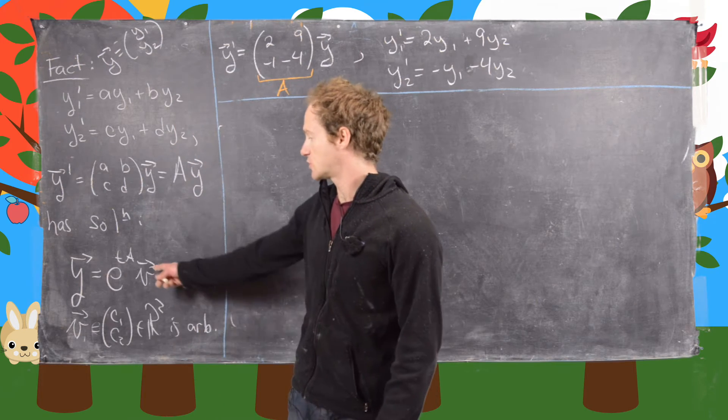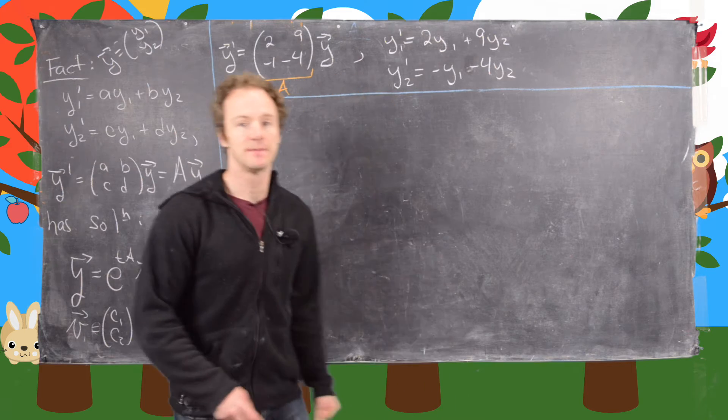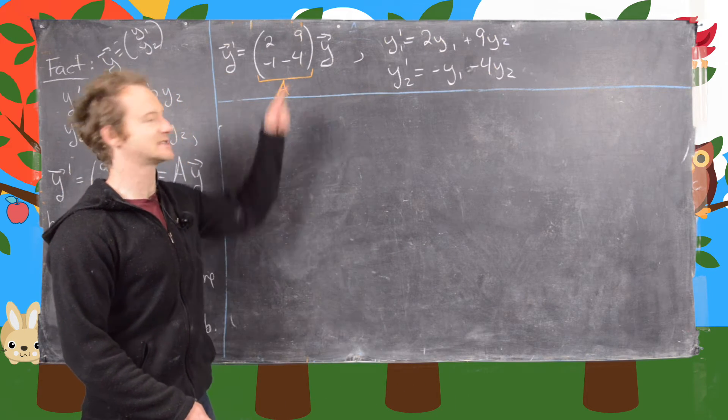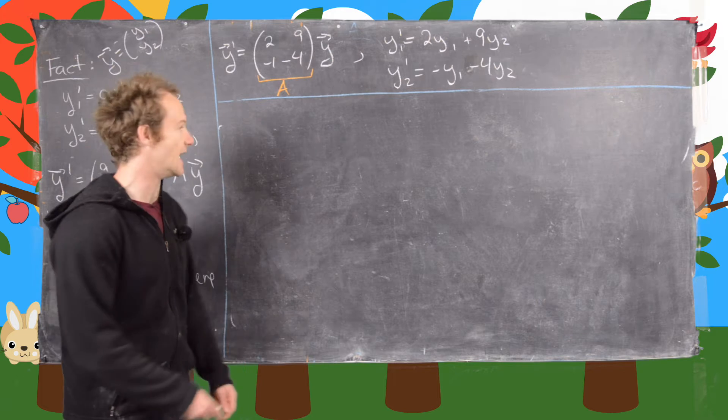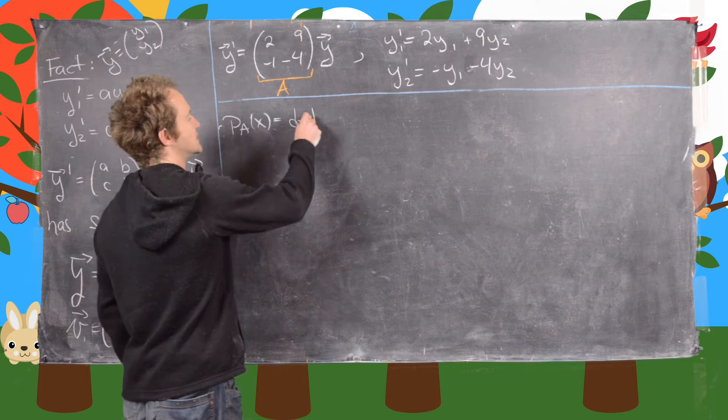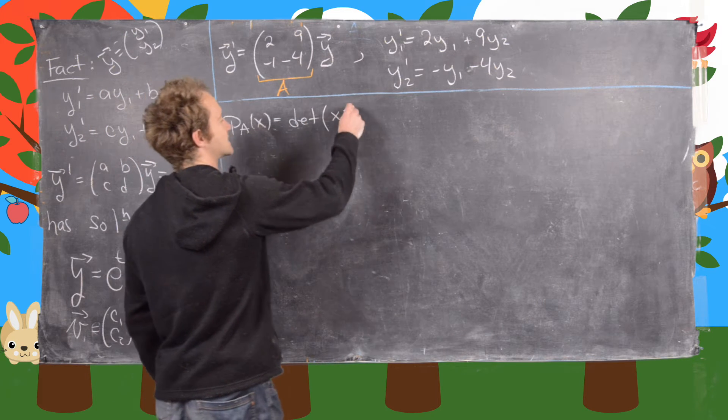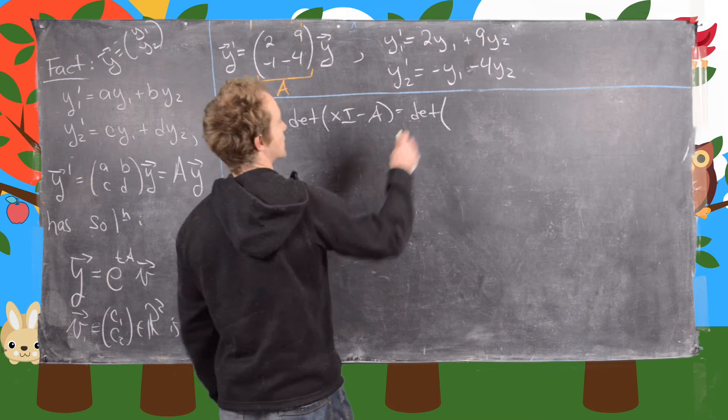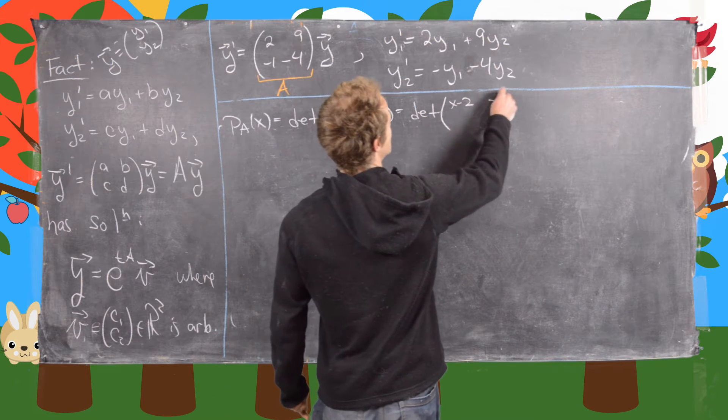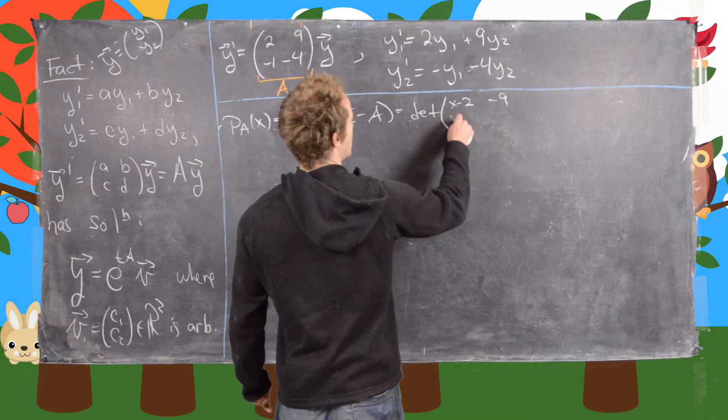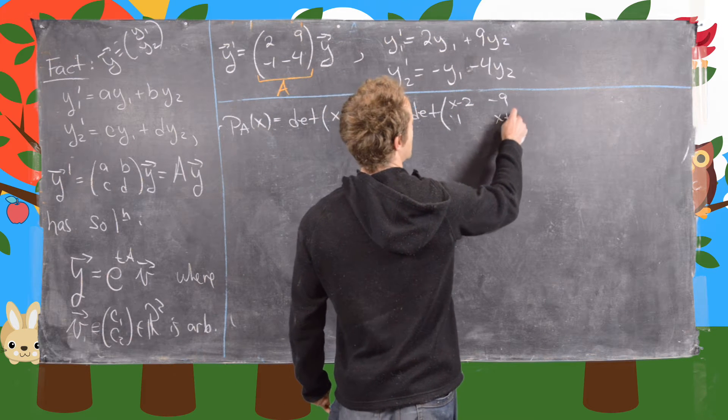So since our solution will depend on this matrix exponential, and the first step of finding the matrix exponential is the eigenvectors and eigenvalues, that means that's what we're going to want to do for A. And that starts off with finding the characteristic polynomial of A, which is given by the determinant of xI minus A. So in this case, that's the determinant of x minus 2, minus 9, plus 1, and then x plus 4.